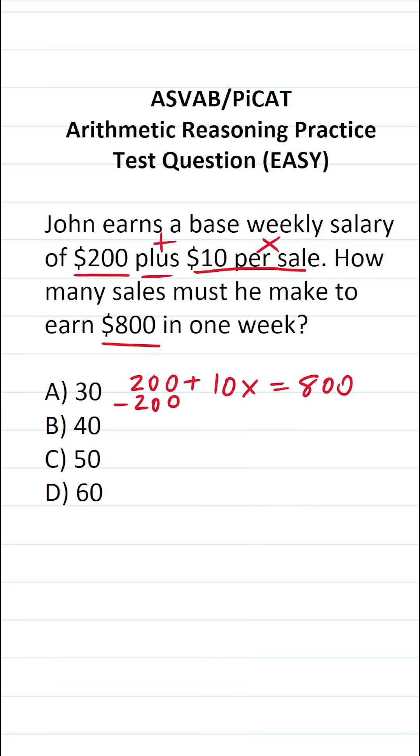The first thing we're going to do is subtract 200 from both sides. In doing so, this crosses out. This says 10x equals 800 minus 200. You should be able to do this mentally, but if you can't, this is 0 minus 0, which is 0. 0 minus 0 is 0. 8 minus 2 is 6. So this is 10x equals 600.